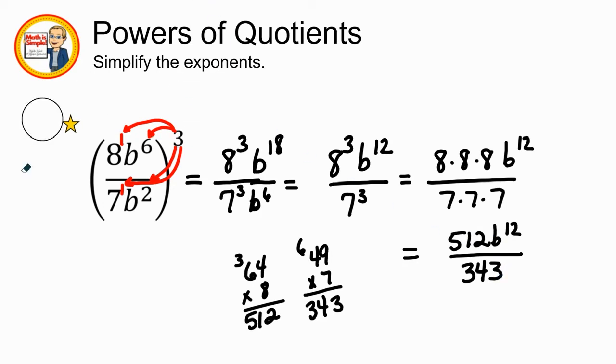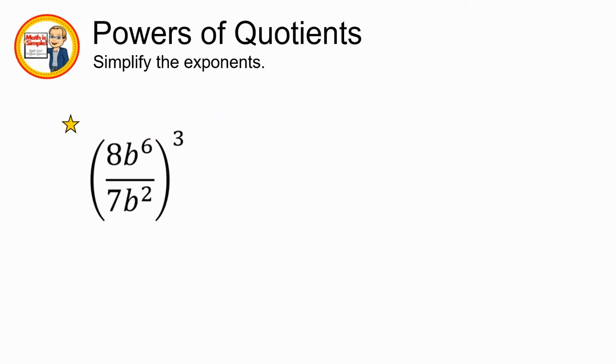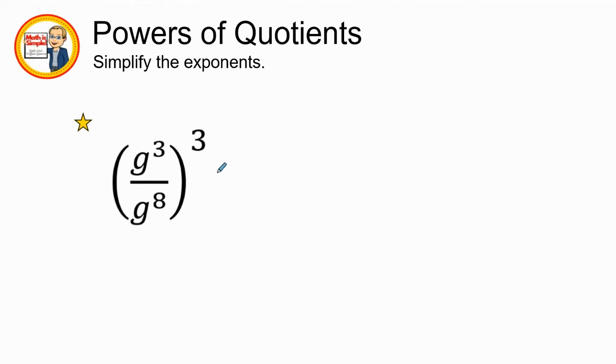Let's go ahead and move on to our next example. Our third example looks a little bit more friendly. We are going to try simplifying on the inside first. So if I subtract these two, g to the 3rd over g to the 8th, it's going to be 5. 8 minus 3 is 5. But since the 8 is in the denominator, my answer is going to be in the denominator. So I'm going to have 1 over g to the 5th power, all raised to the 3rd power.